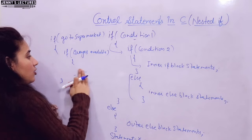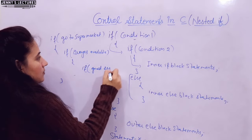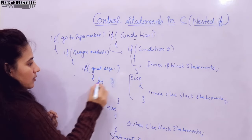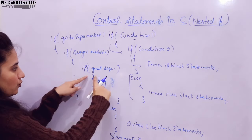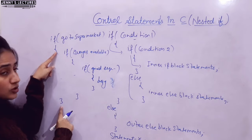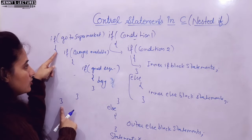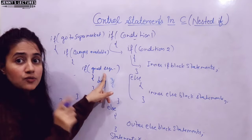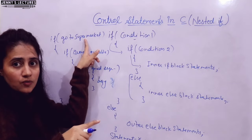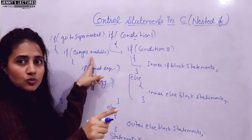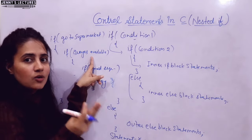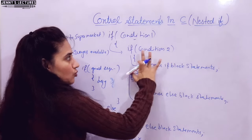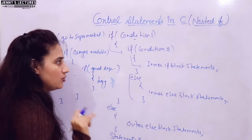Within that inner if, you can write one more if — like: if the oranges are good, then only buy them; otherwise no need. So to check the innermost condition, the outer condition must be true first, and then the middle condition must be true. A common mistake students make is mismatching curly braces — for every opening brace there must be a closing brace. Please take care of this.